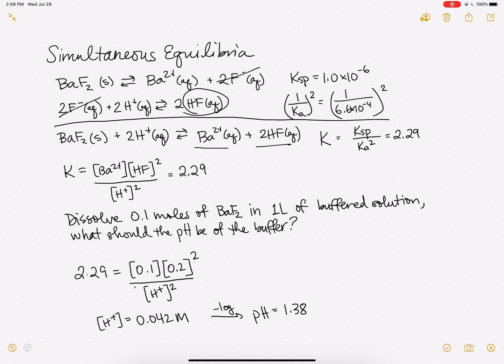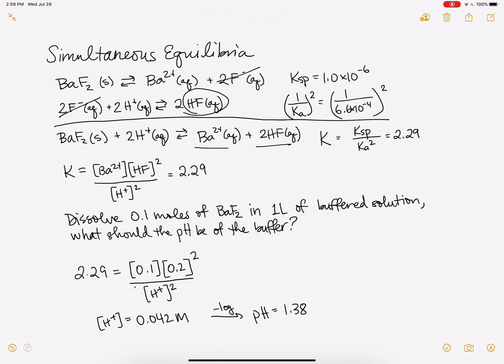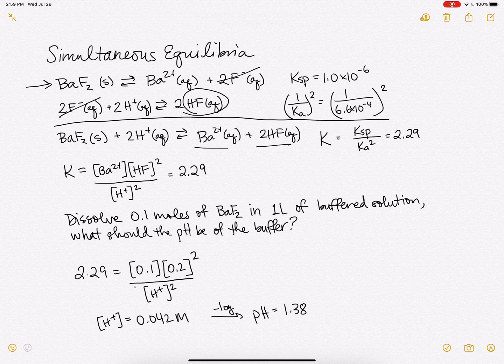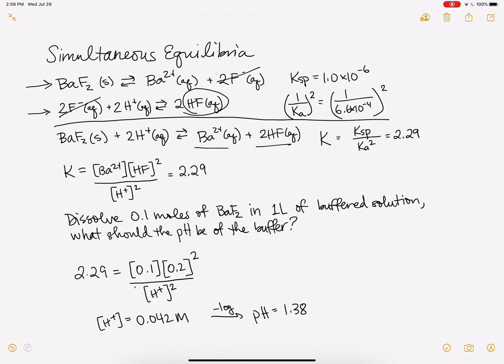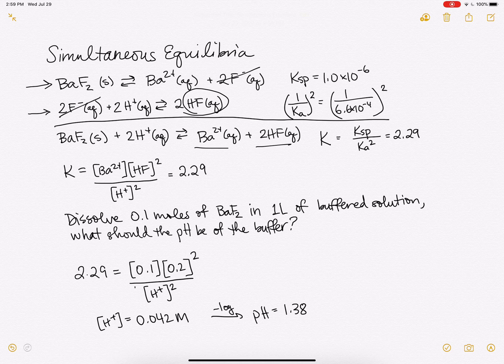So a couple of important things that we've talked about in this video. One is recognizing if you know a Ksp, you actually know this whole chemical equation that's written out up here that's associated with the Ksp. And also if you know the Ka, you know the chemical equation here and you can manipulate it. Like you could turn it around or multiply it by 2 or whatever you need it to do in order to get it to work for the overall reaction that you're trying to get to.